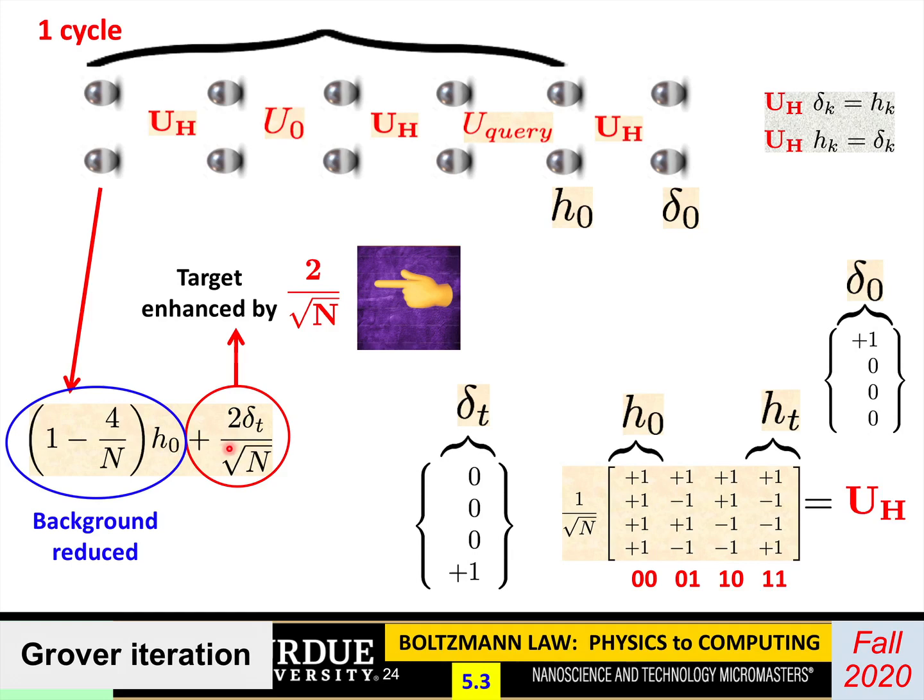At the end of the day, the delta 0 becomes H0, and you have 1 minus 4 over N, and then the H t becomes delta t, so you have 2 delta t over root N. Now you can see the role of the two terms. H0 is plus 1 everywhere. That's the background. What has happened is the background got reduced a little bit. And then delta t, that's the target, the one that has plus 1 only on the target bit, the one we're looking for. That gets enhanced by 2 over root N. That's what we'd say the Grover cycle does. It enhances the amplitude of the target one from 1 over root N to 3 over root N. Every cycle, it enhances it like this and suppresses the background.